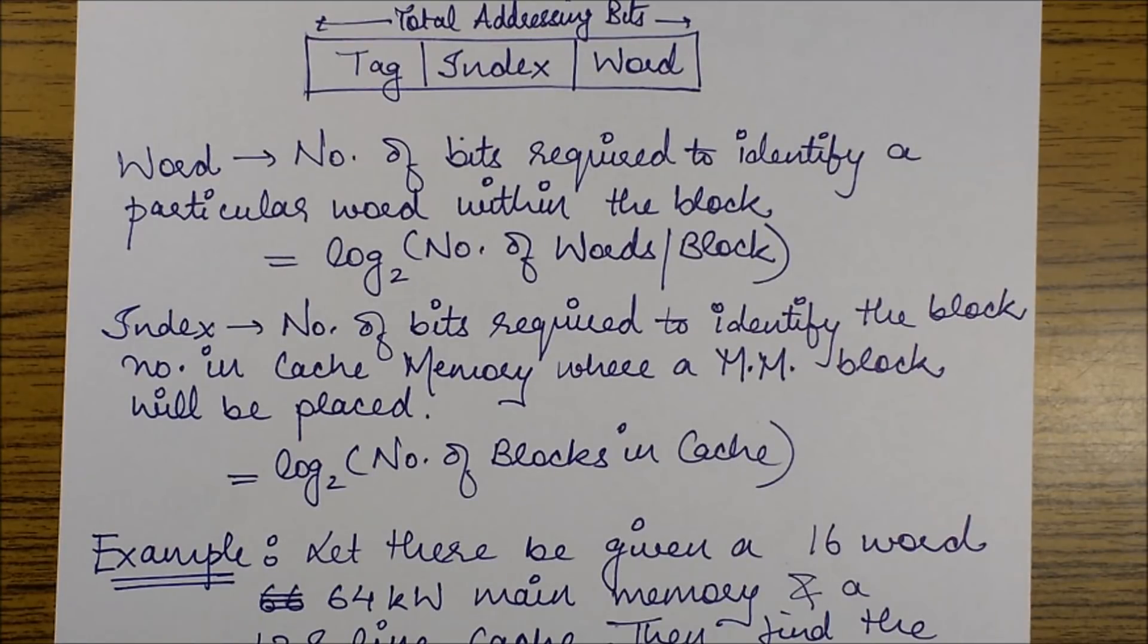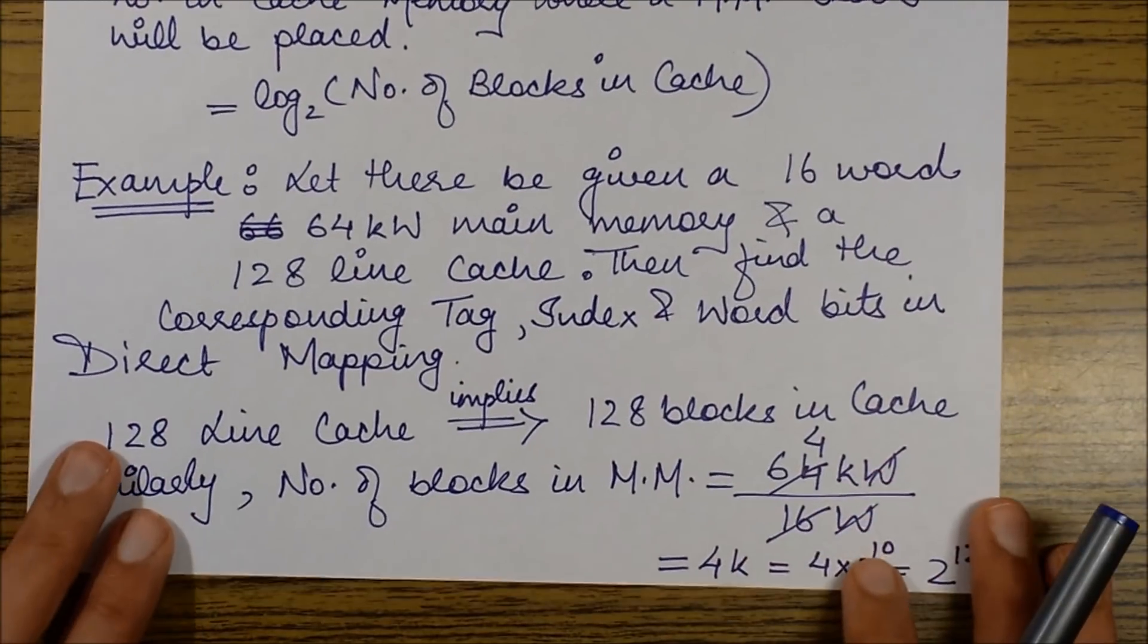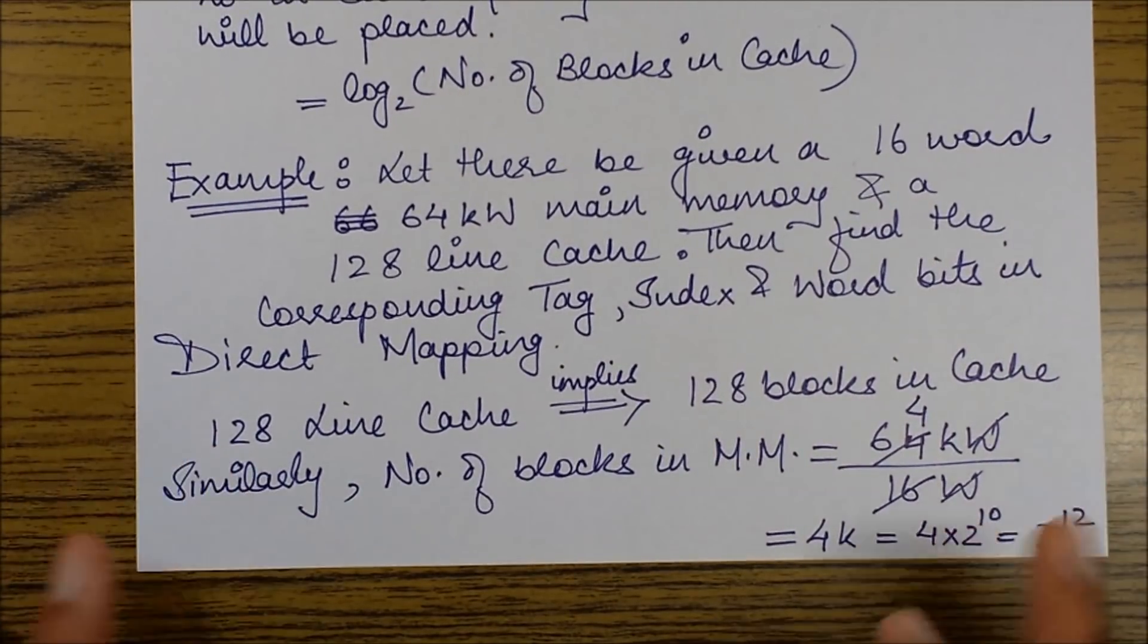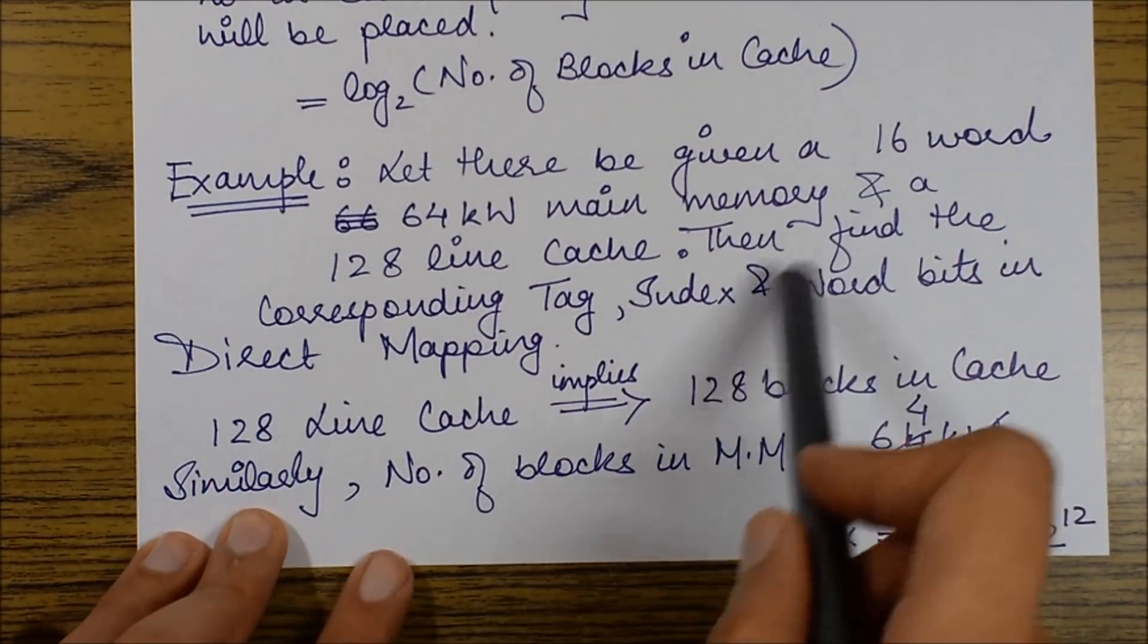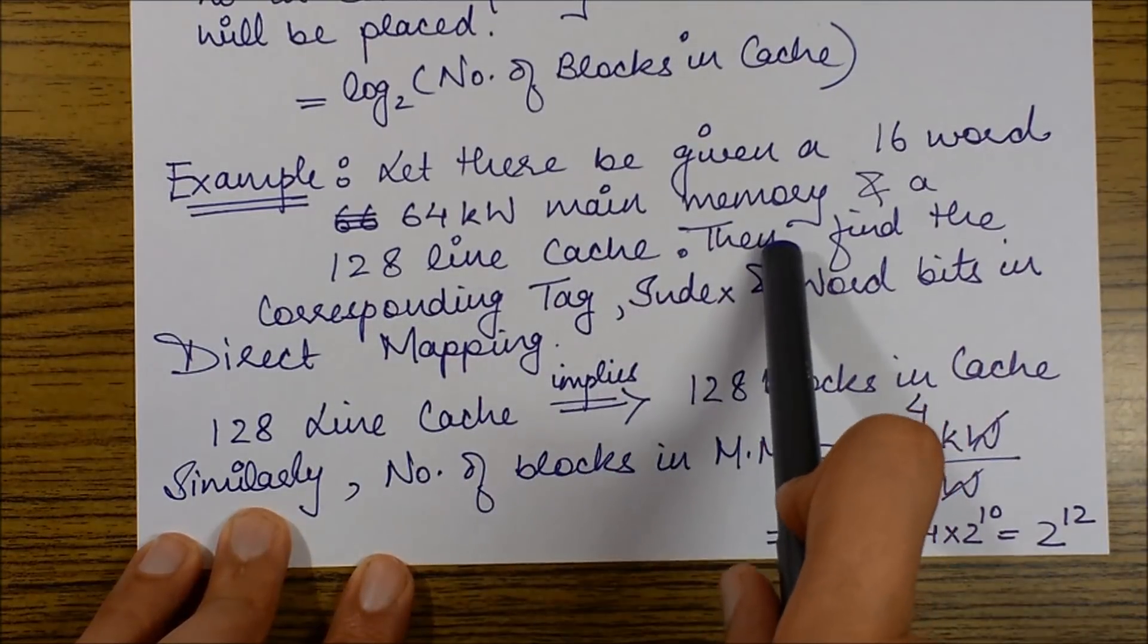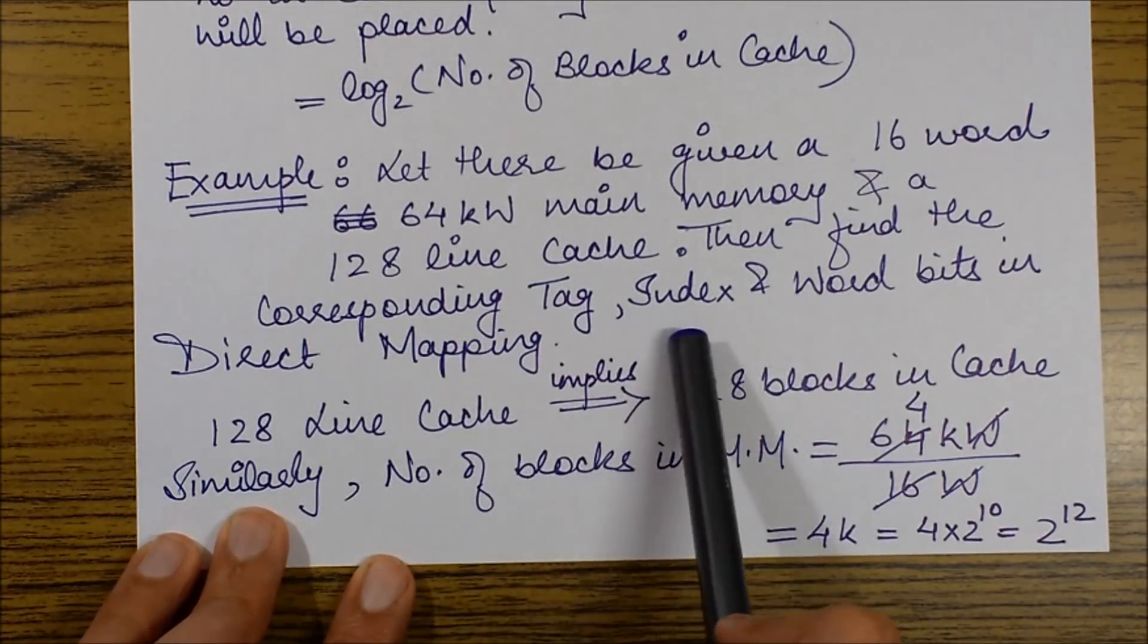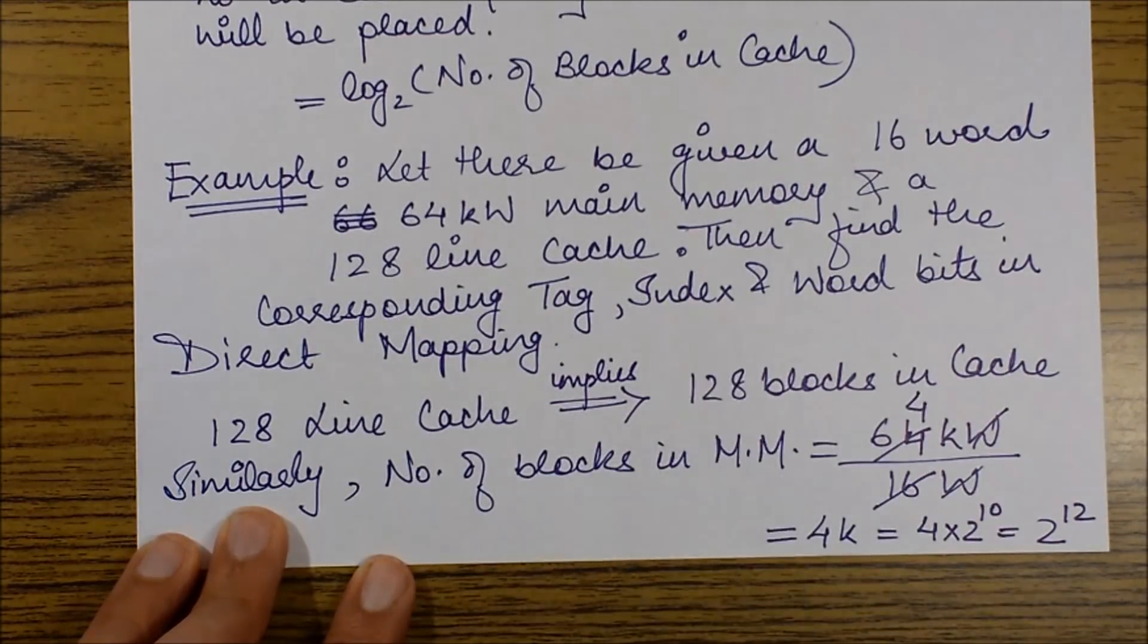Now let's take an example to gain greater clarity of this concept. Let there be a given 16-word, 64 kiloword main memory and a 128-line cache. Find the corresponding tag, index, and word bits in direct mapping.